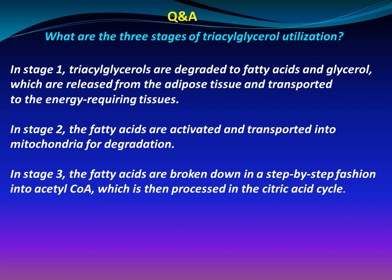What are the three stages of triacylglycerol utilization? In stage 1, triacylglycerols are degraded to fatty acids and glycerol, which are released from the adipose tissue and transported to energy-requiring tissues. In stage 2, the fatty acids are activated and transported into mitochondria for degradation. In stage 3, the fatty acids are broken down step-by-step into acetyl-CoA, which is then processed in the citric acid cycle to produce more ATP.